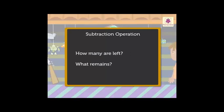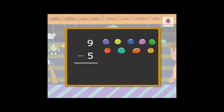This process is called subtraction. Now let's learn to read a subtraction sentence using the subtraction sign — minus. 9 minus 5 is equal to 4.